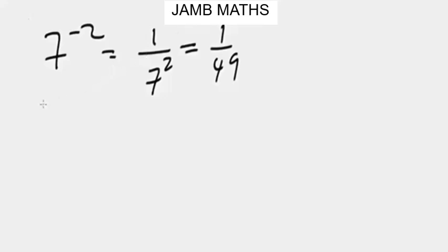Another example: let's say you have something like a to the power negative four. This is the same as one over a to the power four. That's basically what we're trying to explain.